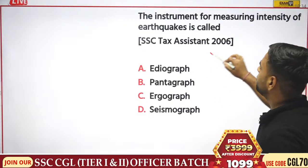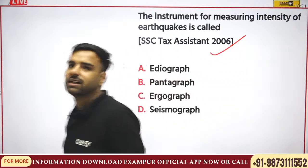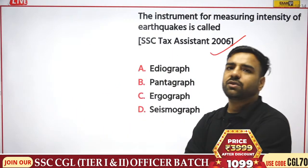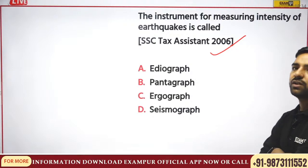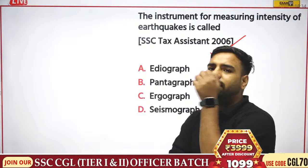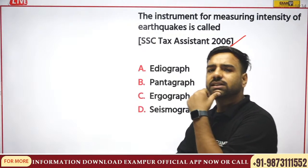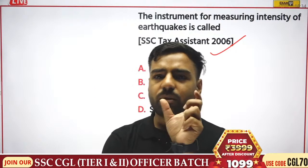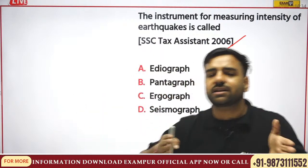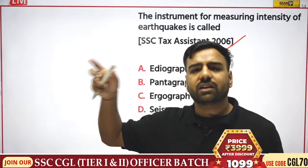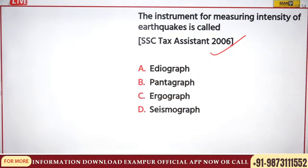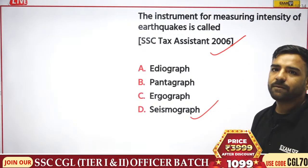From SSC Texas 2006: the instrument for measuring the intensity of earthquakes is what? The answer is seismograph. We know there is a graph — that is seismograph — and a scale that is the Richter scale. Both seismograph and Richter scale are related to earthquakes. The instrument for measuring intensity is seismograph.